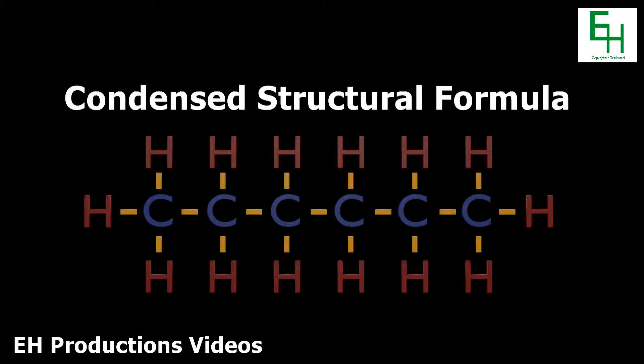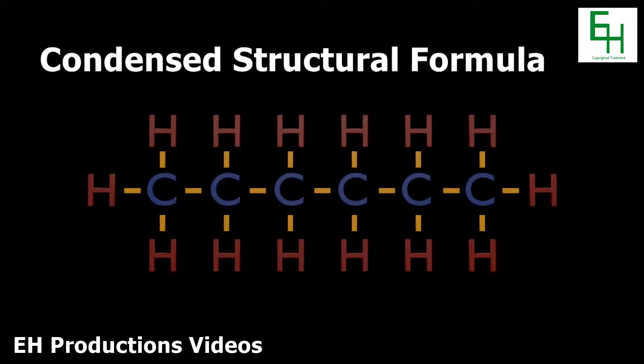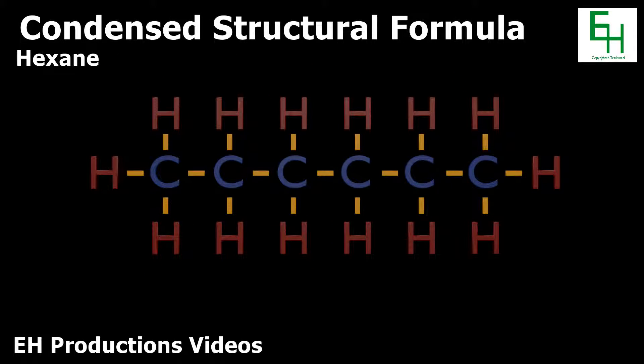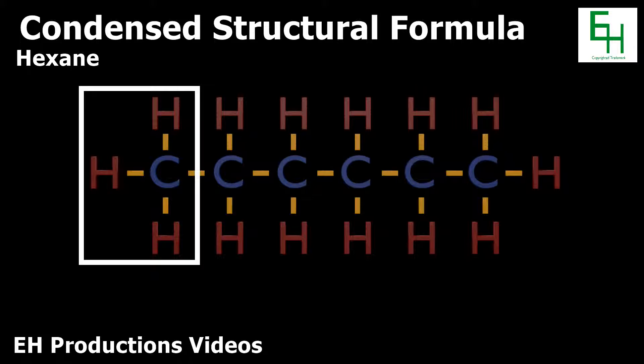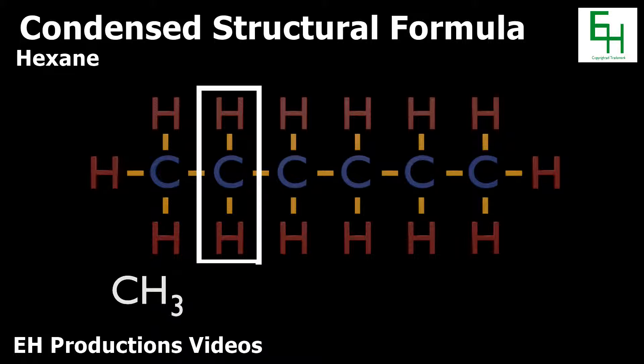Moving on, we have the condensed structural formula. Using the completed structural formula we previously made, we are now going to write the condensed structural formula for hexane. As you can see, the first carbon is bonded to three hydrogens, so we write CH3. Then the next one is only bonded to two hydrogens, so we write CH2.